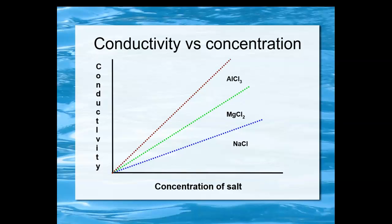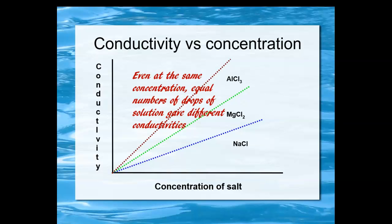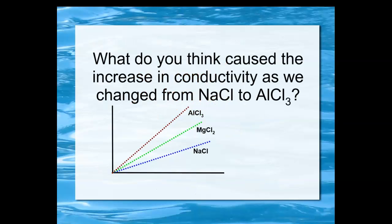This is of course an idealized graph. Yours may look a little different from this, but you did see that the slopes of the lines are different. So that even at the same concentration, equal numbers of drops of the different solutions gave different conductivities. What do you think caused the increase in conductivity as we changed from sodium chloride to aluminum chloride?